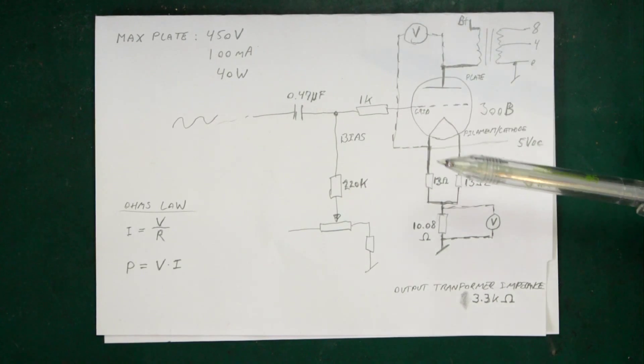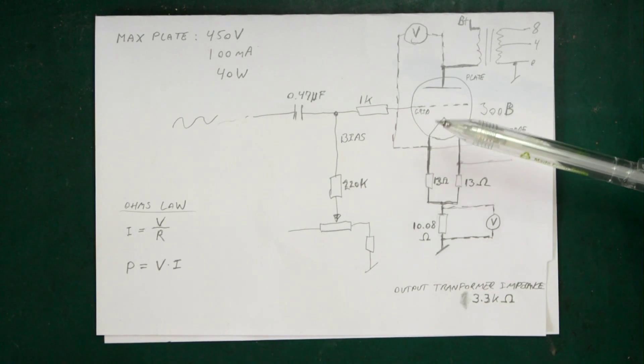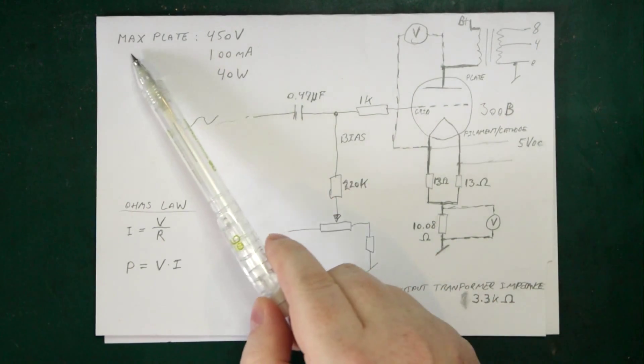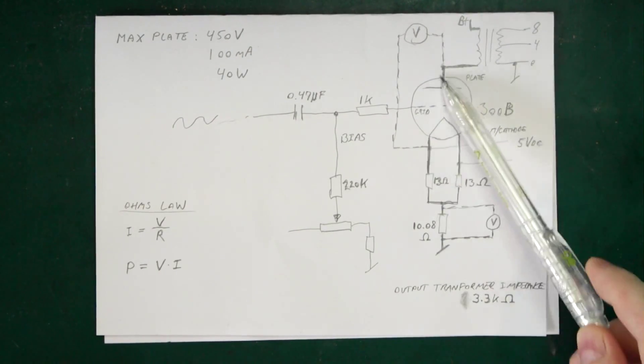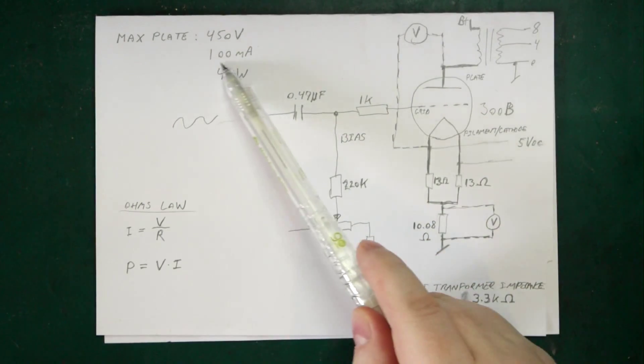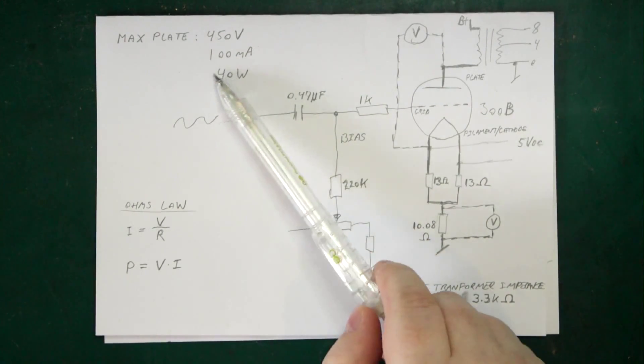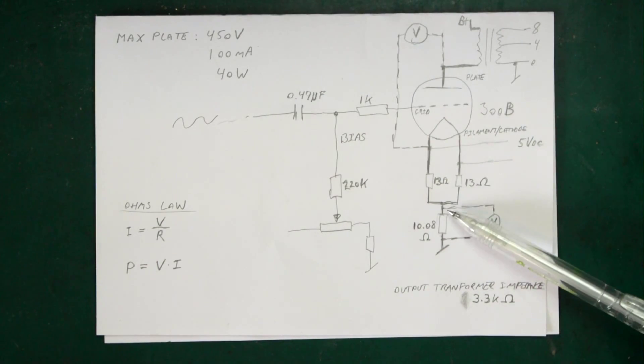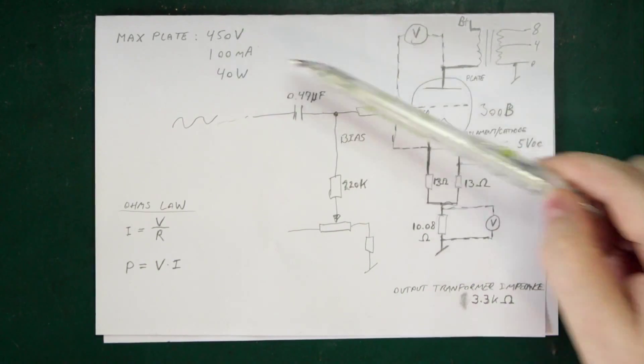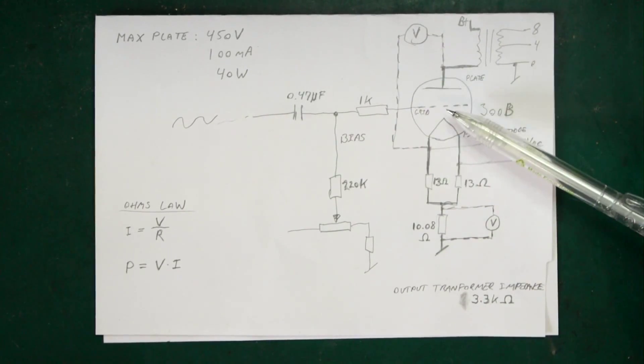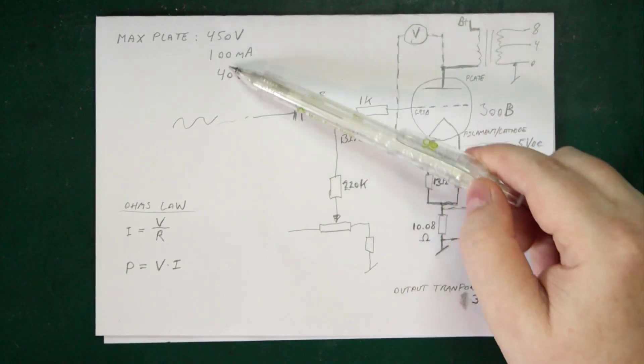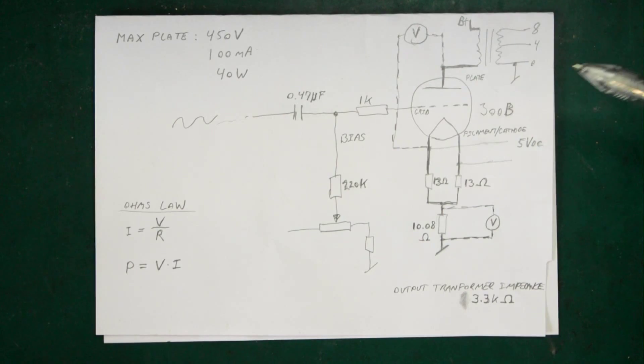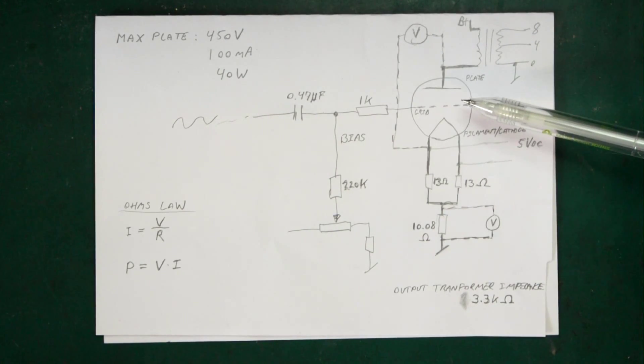So look at the 300B datasheet, we have some maximum values we need to be aware of. So the maximum plate voltage is 450 volts, that's across here. So hopefully it's not exceeding that. And the maximum plate current is 100 milliamps, so that would be what we are measuring across here. And then the dissipation in the tube maximum 40 watts. So we shouldn't be anywhere near these values. But we don't know until we actually measured it.